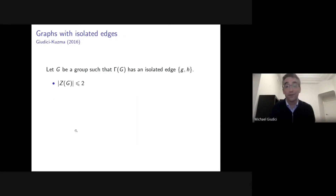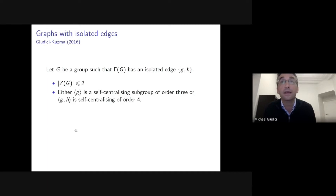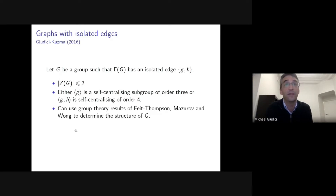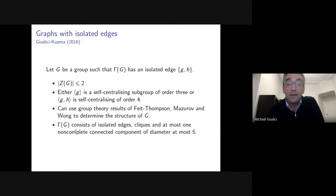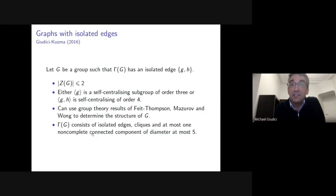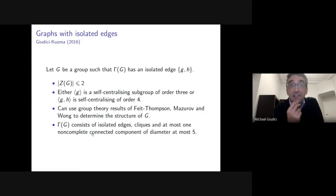Moving to isolated edges: if the commuting graph has an isolated edge {g, h}, then the center has order at most 2, and either the subgroup ⟨g⟩ is self-centralizing of order 3 or ⟨g, h⟩ is self-centralizing of order 4. Using results of Feit–Thompson, Maschke, and others we determined the group structure, showing the commuting graph consists of isolated edges, cliques, and at most one non-complete connected component of diameter at most 5.